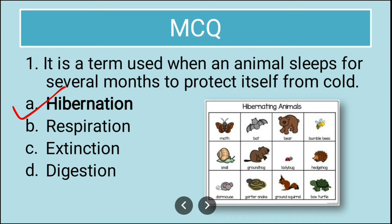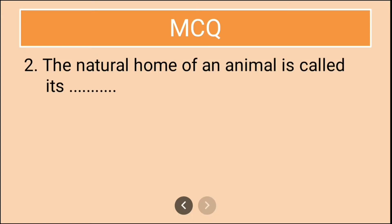What is hibernation? When an animal sleeps for several months. There are animals which sleep for a very long time. Examples are bats, bears, and snails. They sleep not because they are lazy, but because they want to protect themselves from cold.